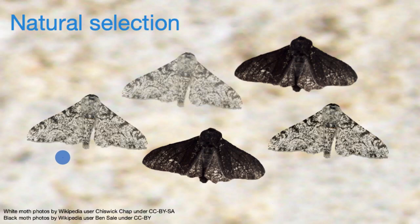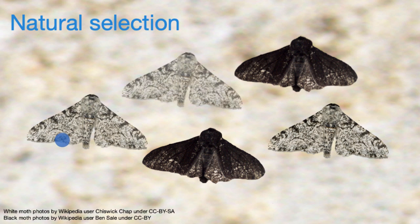You might be familiar with the idea of evolution, that species change over time. And you can see that if you look at old bones, old fossils, how they change through the fossil record. But the obvious question is, how do these species actually do that? What is the mechanism?